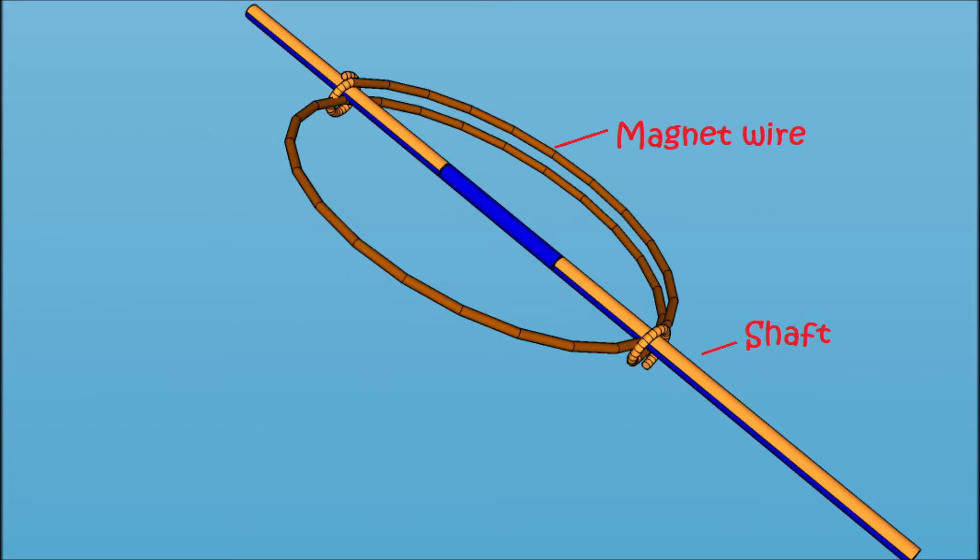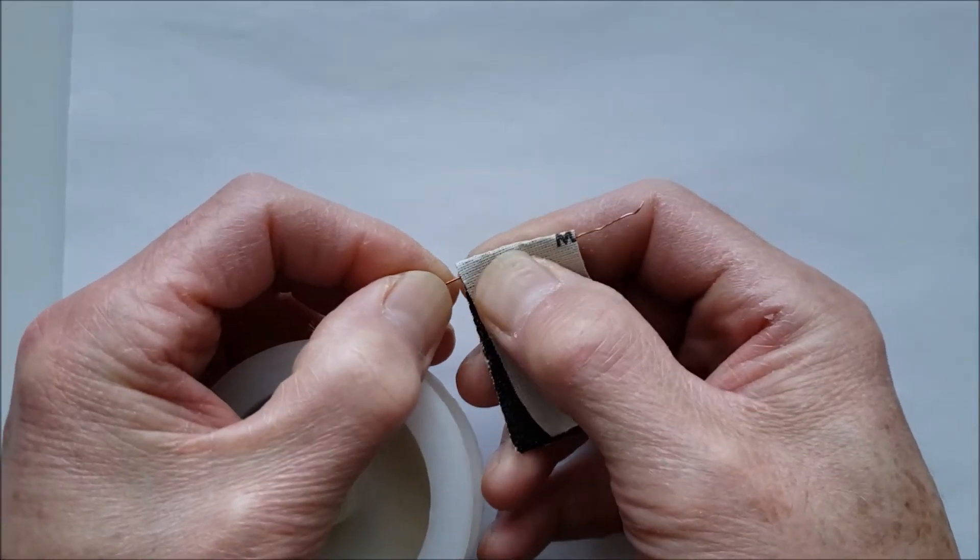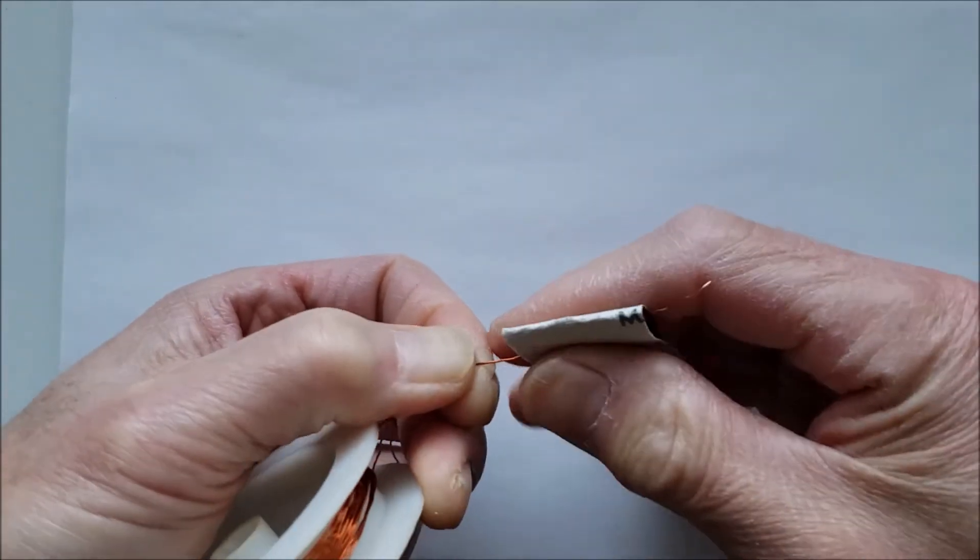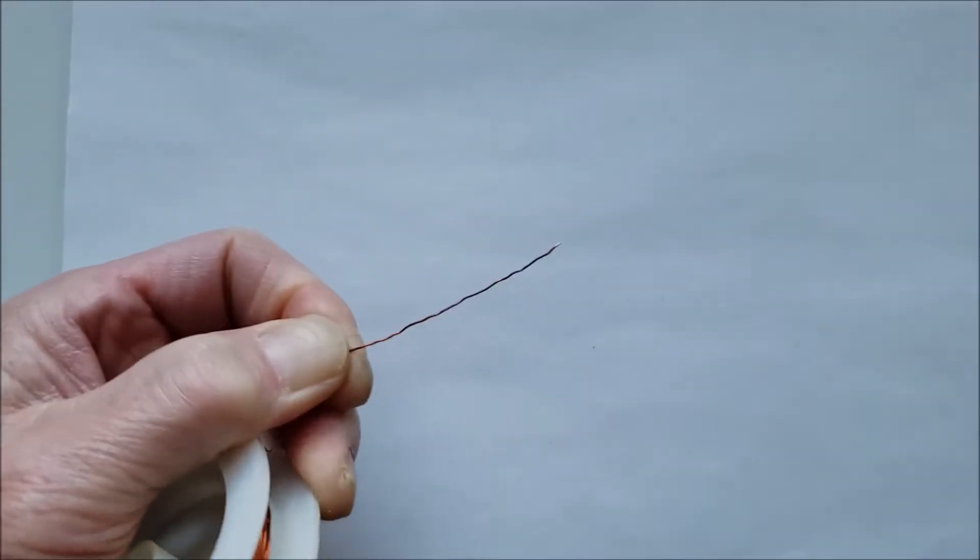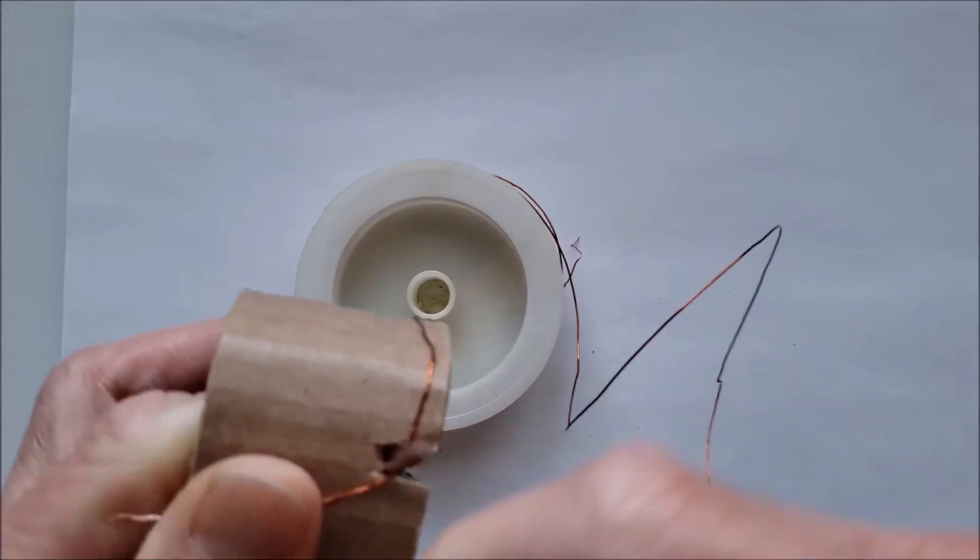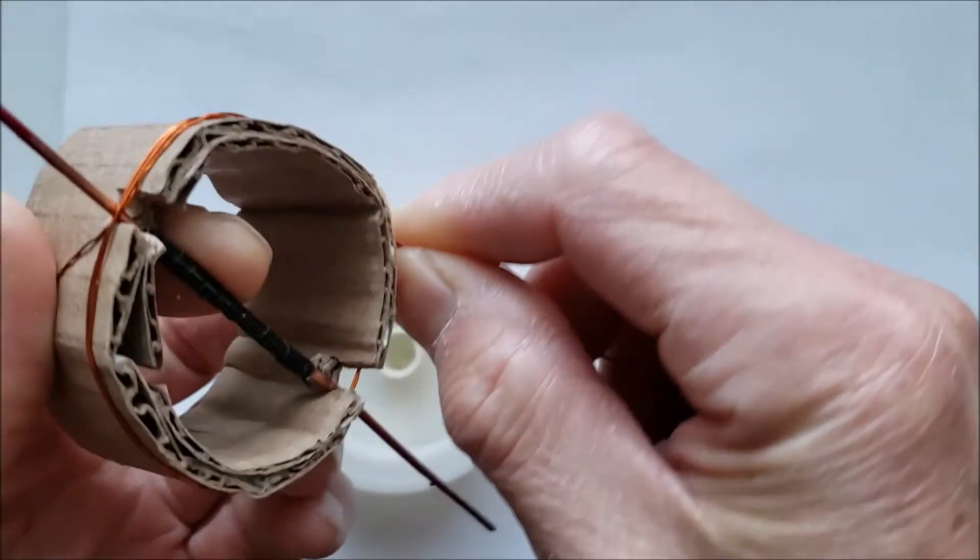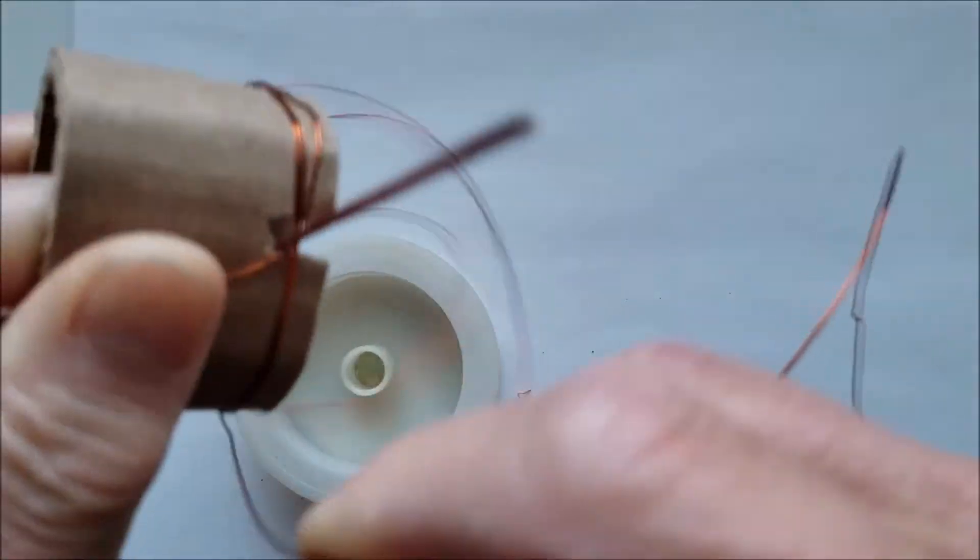Let's start with a coil. Take the magnet wire and completely remove the varnish on the first 5 centimeters with sandpaper. Hold the shaft against the slots and wrap the magnet wire around the tube, one turn on each side of the shaft.